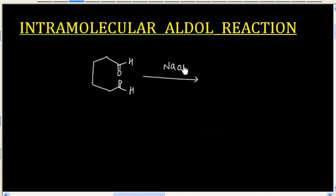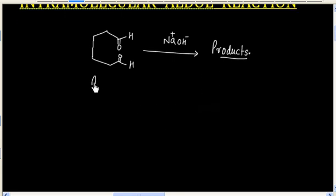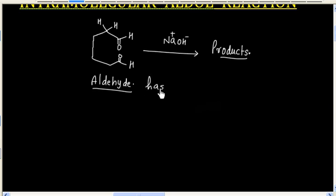Now let us consider this reaction. We have to write products for this reaction. This is an aldehyde and this compound has alpha-hydrogen. So in this case we will have an aldol reaction.